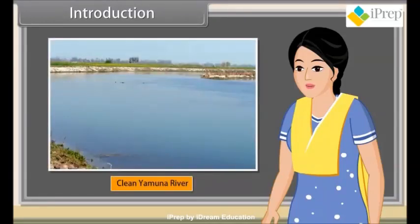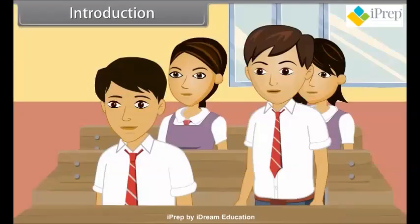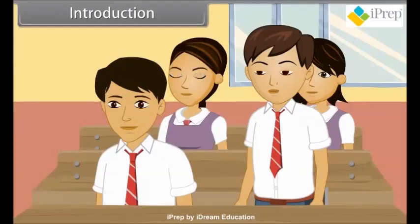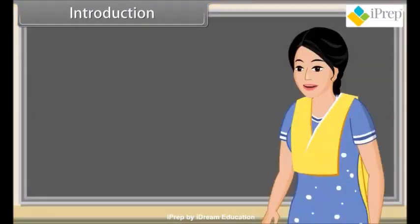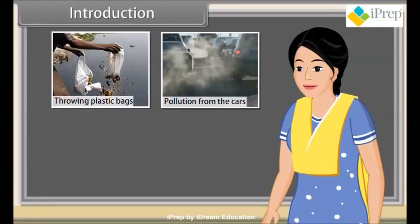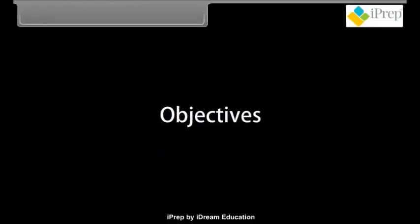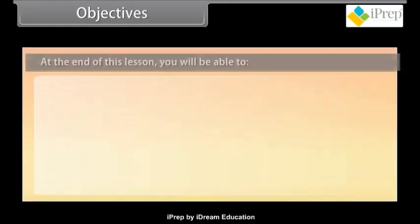Have a look at how our activities have made it polluted and dirty. Many of our activities destroy the clean state of rivers, such as throwing plastic bags, pollution from cars, and dumping of industrial wastes. Let us explore them in detail and their effects on our environment.